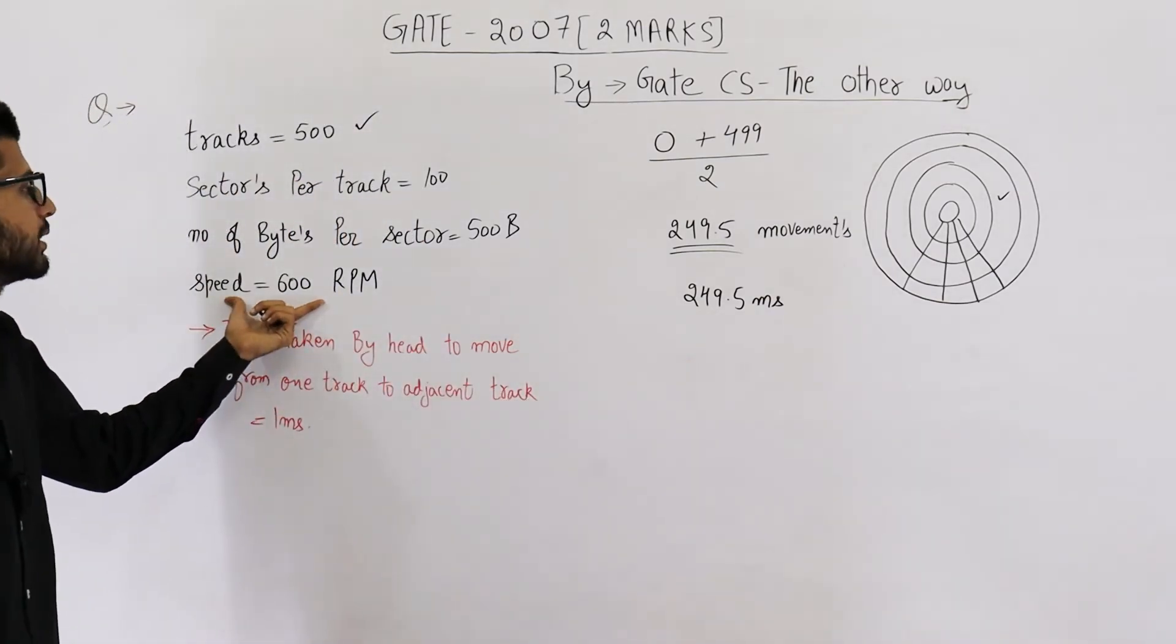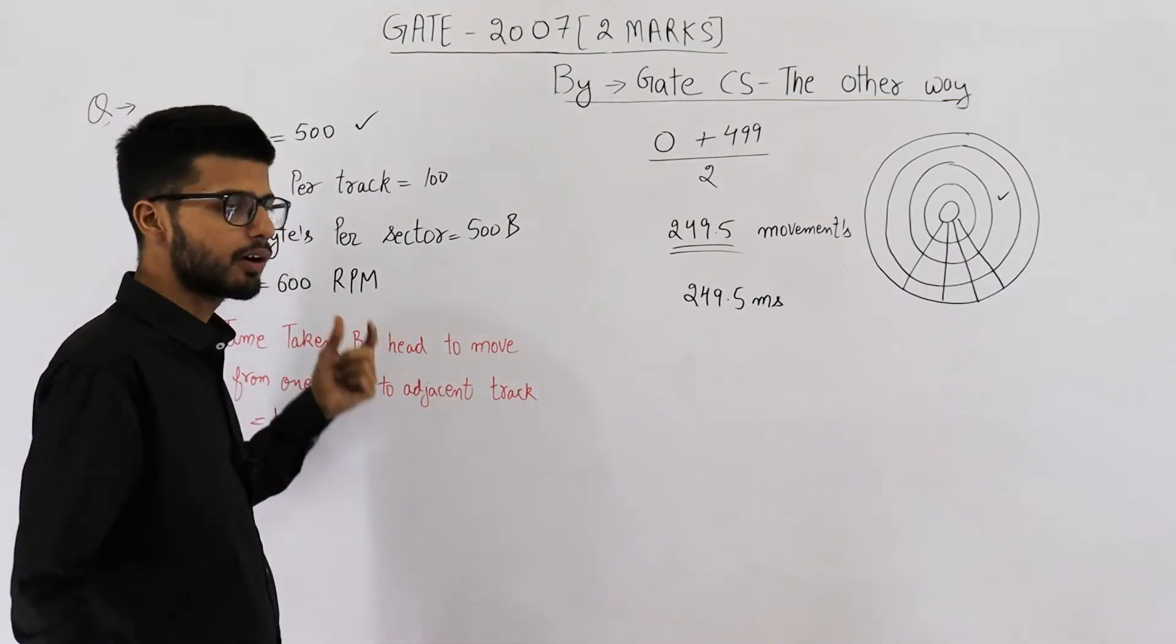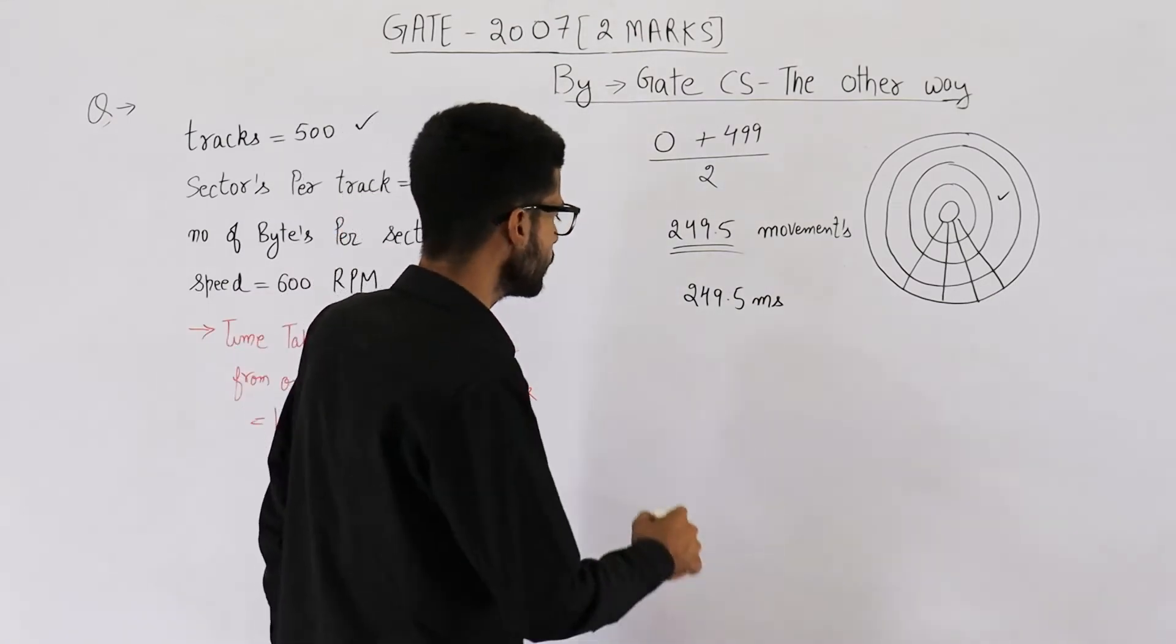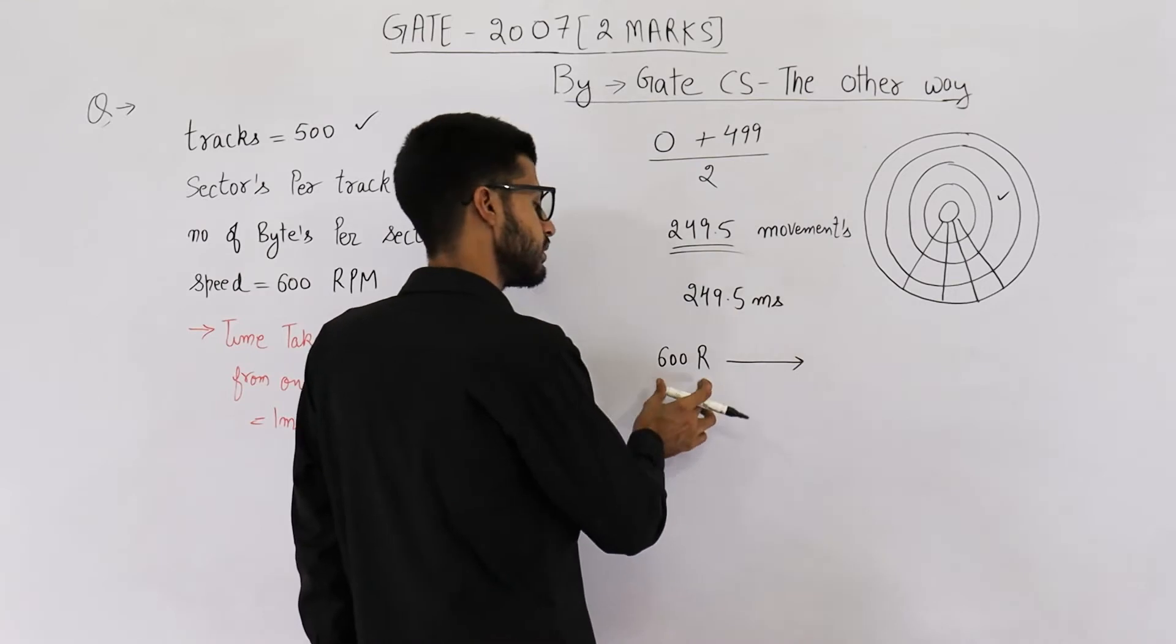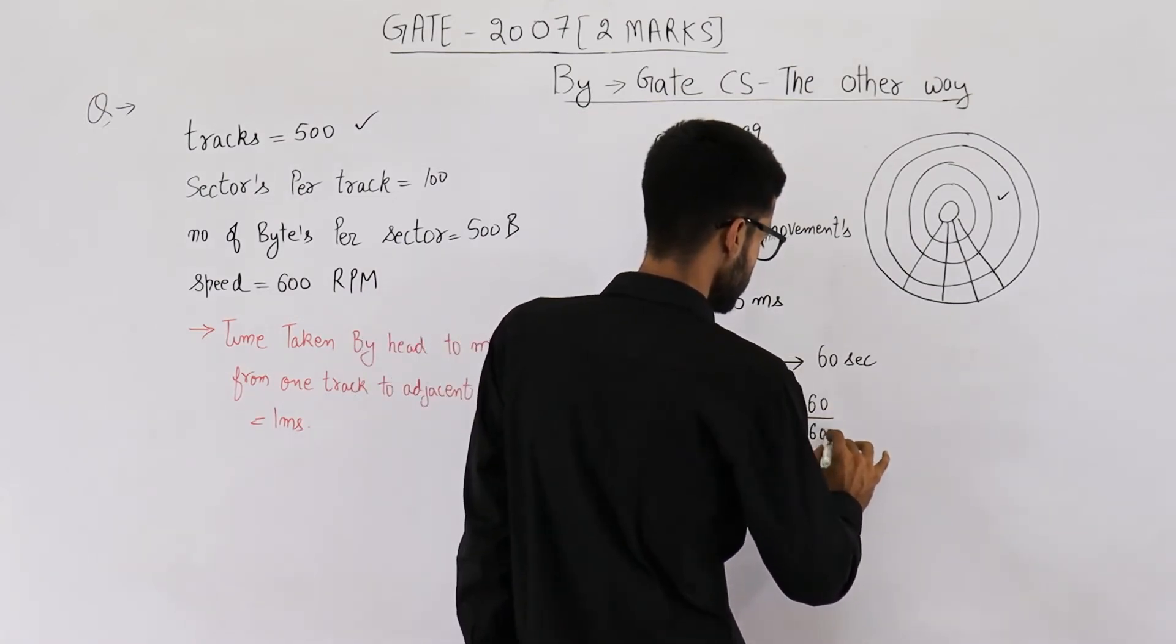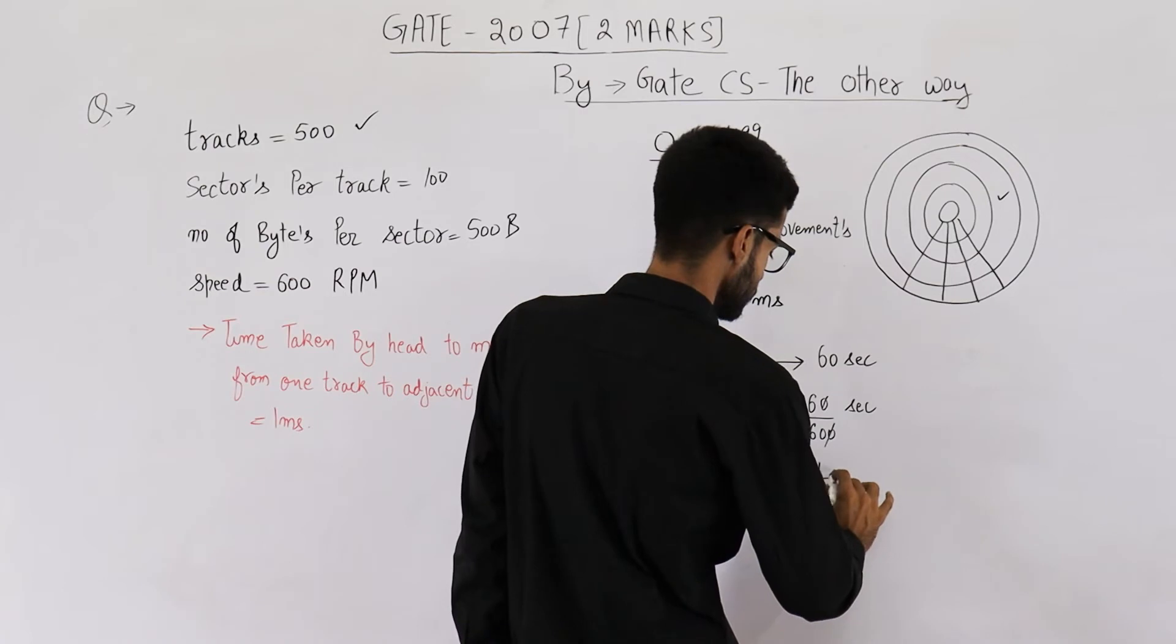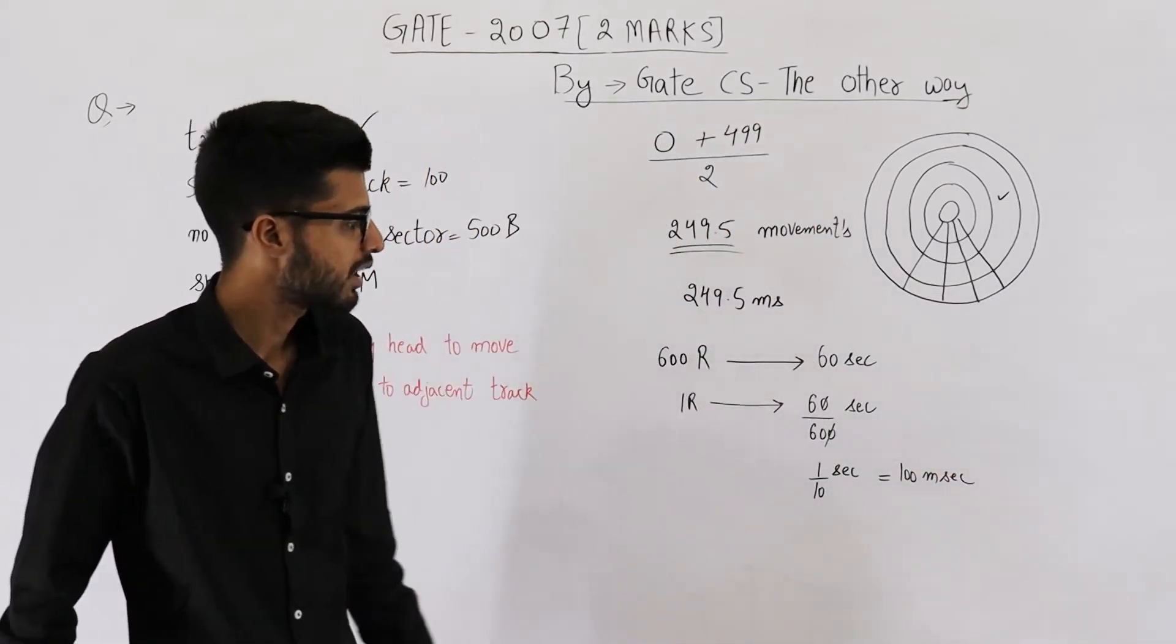They have given us the RPM, that is the speed at which platter is rotating. Let's convert this RPM or let's try to find out the rotational delay from RPM. We are given that speed is 600 RPM which means 600 rotations in 60 seconds. One rotation will take 60 by 600 seconds. This comes out to be 1 by 10 seconds which is also 100 milliseconds.